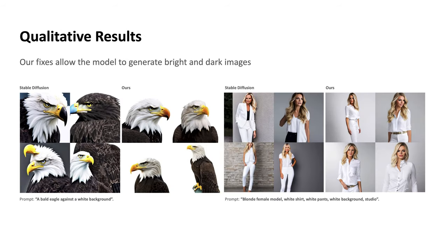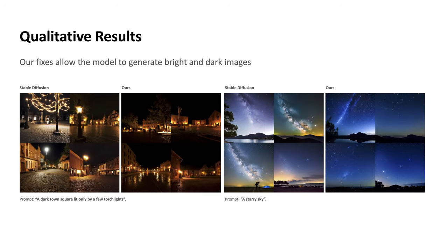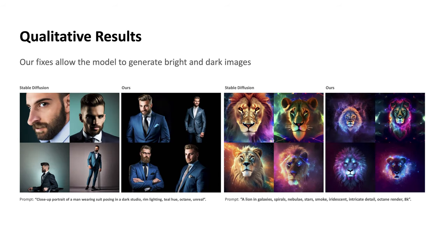We train a stable diffusion 2.1 model on our data with and without the fix in parallel to show that our method indeed fixes the problem. When we ask the model to generate a bald eagle against a white background, the model with our fix generates the white background much more correctly. When asked to generate a female model wearing a white shirt, white pants, and a white background studio, it correctly generates the white background. In more general examples, when generating a dark town or a starry sky, our model generates darker samples as it should, whereas the original model tends to generate medium brightness images with a much smaller dynamic range.